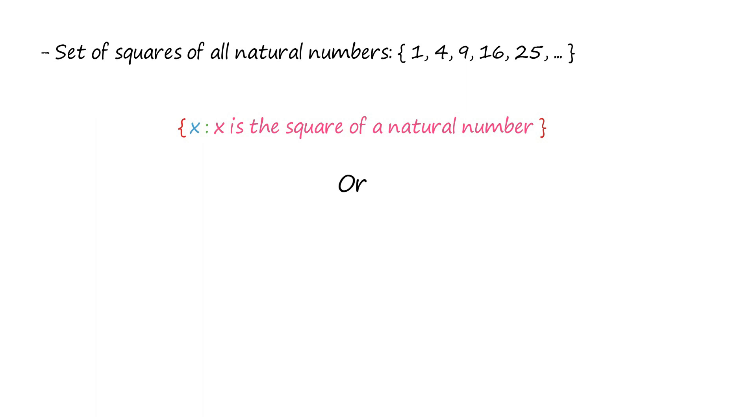There can be more than one set builder form of a set. For example, the set of squares of all natural numbers can be represented simply like this, or we can represent it in another way by writing the characteristic property as x equals n square, where n belongs to natural numbers.